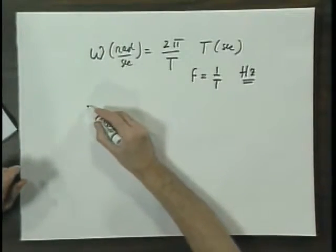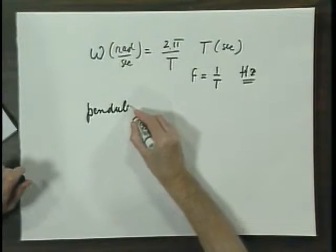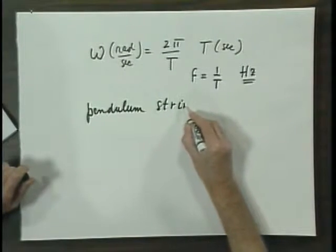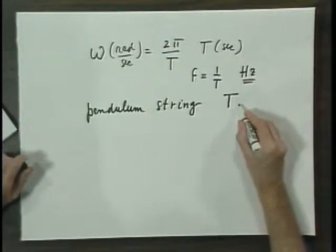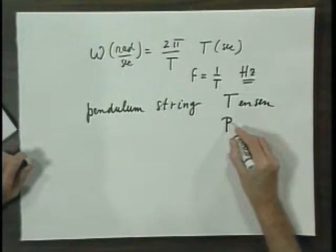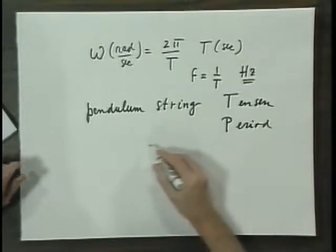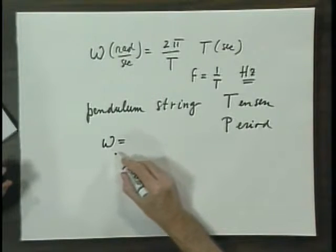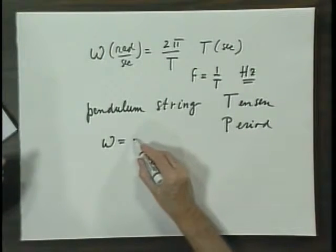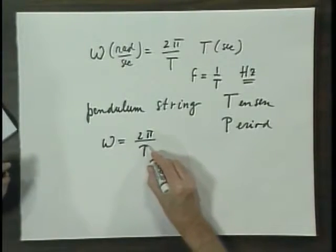I will therefore use capital P for the period of a simple harmonic oscillation, but only when we're dealing with a pendulum with a string — that means when you have tension. So in the case of a pendulum with a string, I will reserve T for tension and P for period. That means omega, the angular frequency of the pendulum with a string and a bob, will be 2pi divided by P.